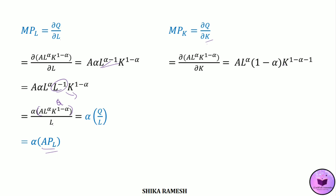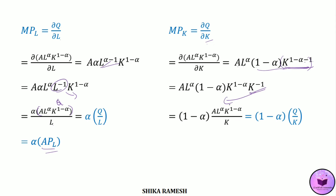Similarly, the marginal productivity of capital is found by differentiating with respect to K and splitting the K factor. We get A·L^α·(1−α)·K^(1−α)·K^(−1). Bringing K^(−1) to the denominator gives (1−α)·AL^α K^(1−α)/K, which equals (1−α)·(Q/K).